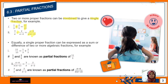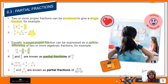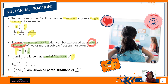You can see here this is our single fraction — you combine using plus and minus. Equally, a single fraction can be expressed as a sum or difference of two or more algebraic fractions. For example, 1/3 and 2/5 are known as partial fractions of 11/15. So 11/15 is your single fraction, and the partial fractions are the separated ones.